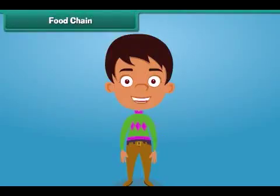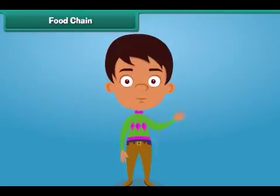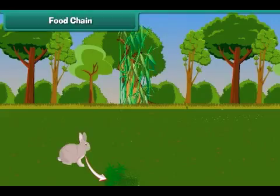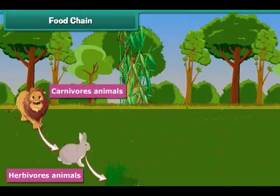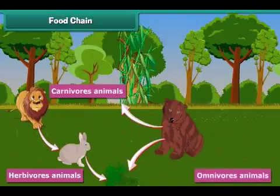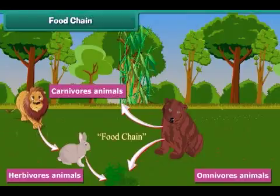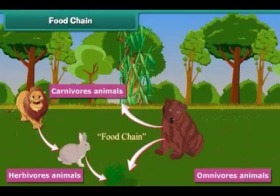Friends, do you know that all animals are connected to each other? They are all dependent on one another for food. Herbivores eat plants to get nutrition. Carnivores eat the flesh of herbivores, while omnivores eat both herbivores and carnivores. A food chain is the sequence of who eats whom to obtain nutrition. For example, a rabbit eats grass, and a lion eats the rabbit. A bear can eat both.